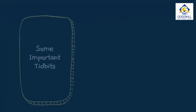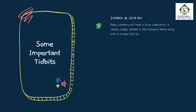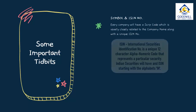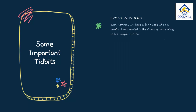Now let us look at some important tidbits that you must remember as a shareholder. First, the symbol and ISIN number. Every company will have a script code closely related to the company's name, usually an abbreviated form. The company will also have a unique ISIN number, also known as an International Securities Identification Number, which comprises 12 alphanumeric characters. Indian securities usually start with the alphabets I and N, followed by 10 other characters.